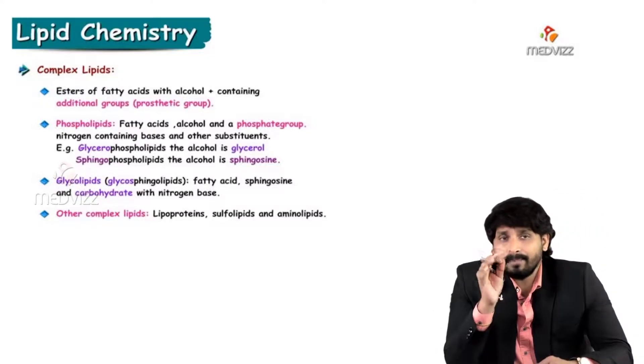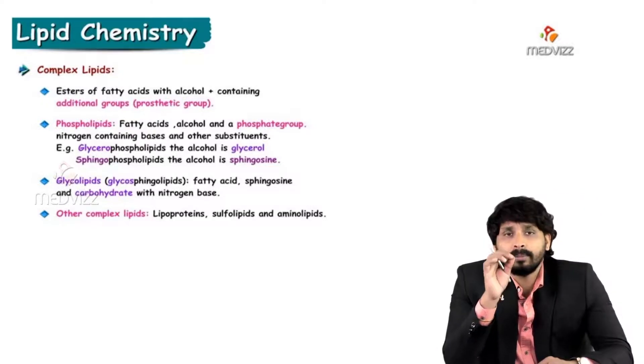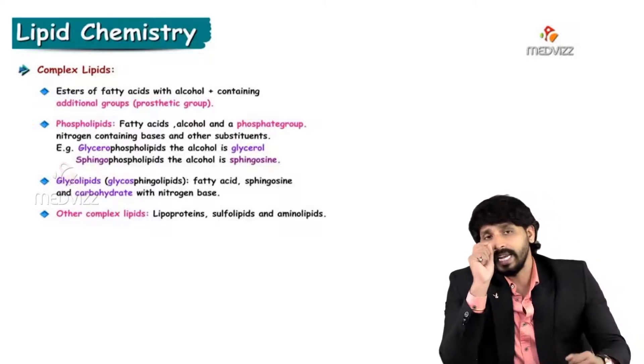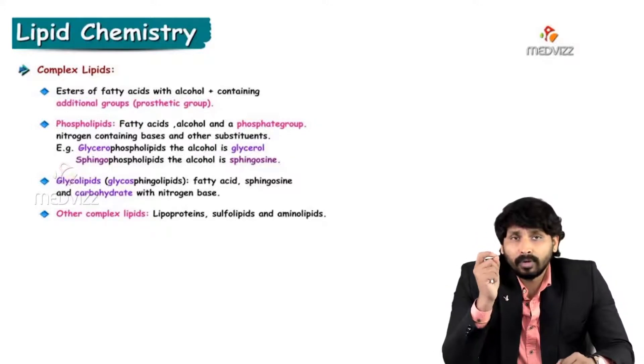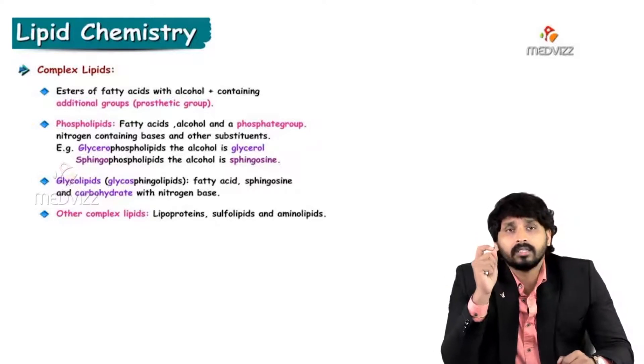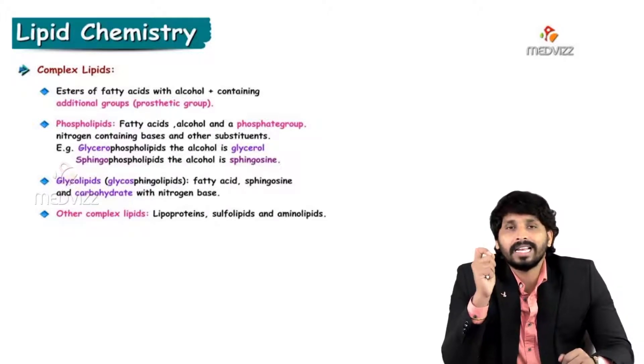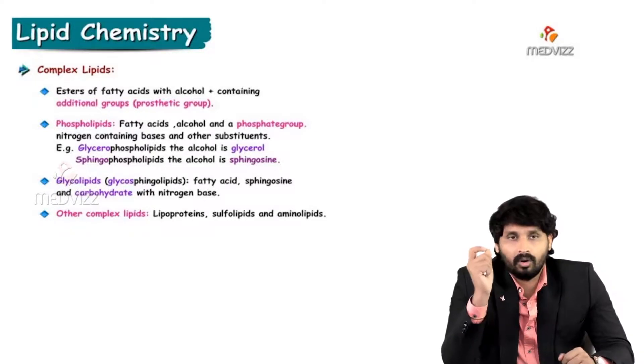And based on the type of alcohol, again, phospholipids classified into two types: glycerophospholipids and sphingophospholipids. So with the name itself indicating glycerophospholipids carries glycerol as alcohol and sphingophospholipids carries sphingosine as an alcohol.